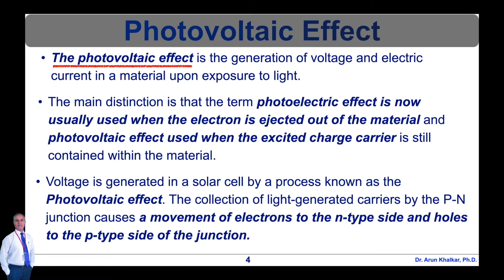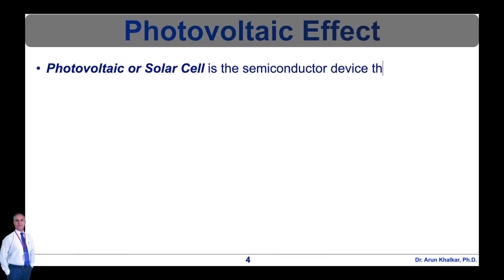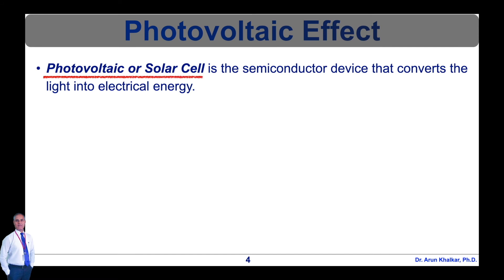The collection of light-generated carriers by the p-n junction causes a movement of electrons to the n-type side and holes to the p-type side of the junction. Under short circuit conditions, there is no build-up of charge as the carrier exits the device as light-generated current. The short circuit current, potential voltage, and other parameters related to the solar cell will be discussed in detail later.